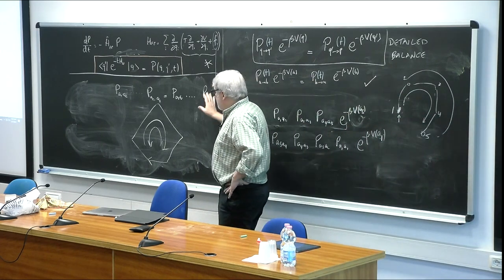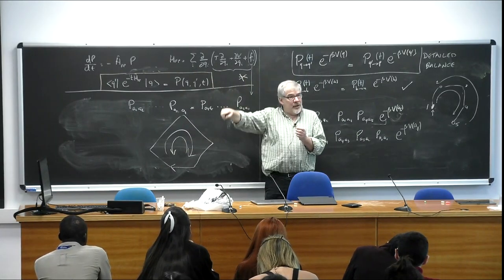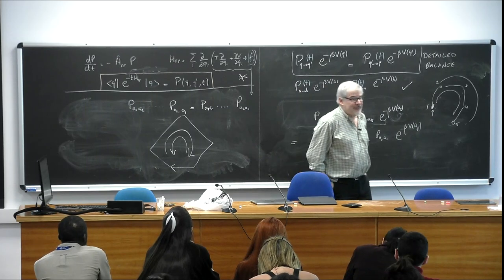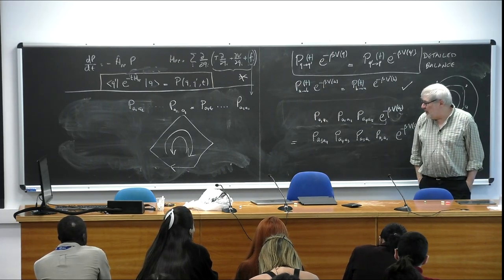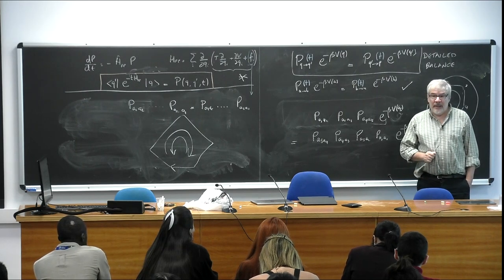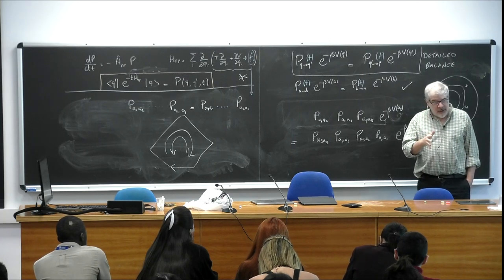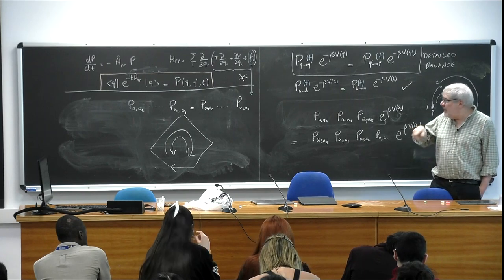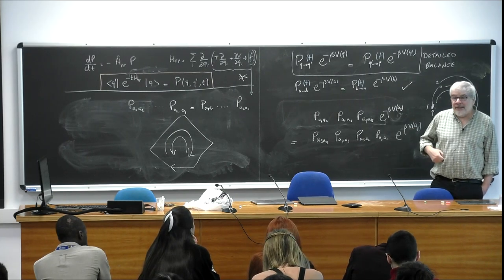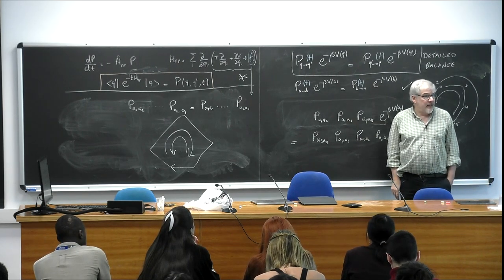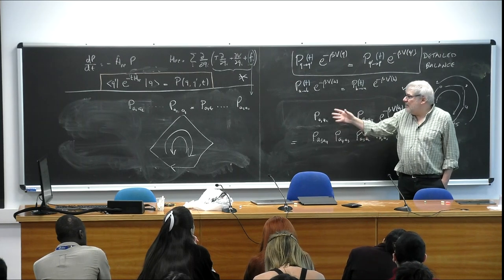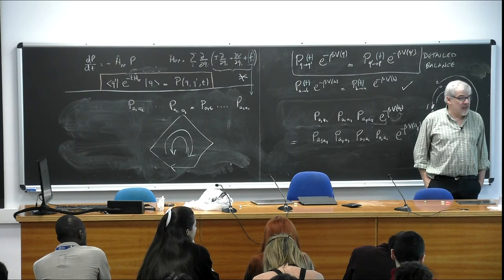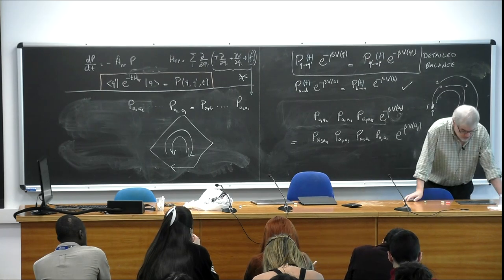This way of writing it — that the probability of following a closed circuit and the probability of following the reverse cycle at those same times are the same — is a beautiful way of introducing equilibrium. What the bath is doing to you is that for any circuit you can think of, the forward and reverse probabilities are the same. You can start there and re-derive all the equilibrium properties.